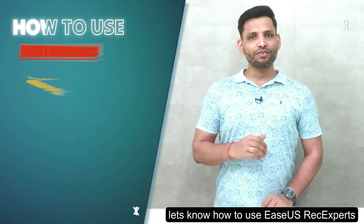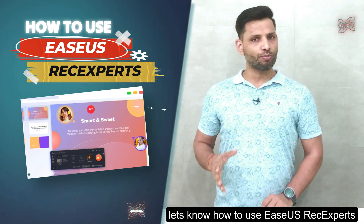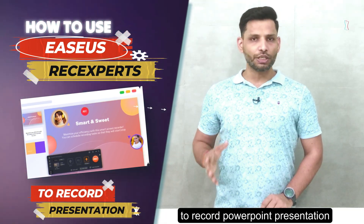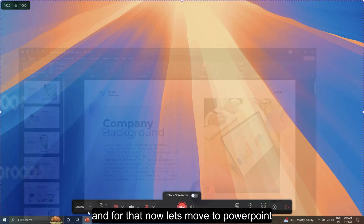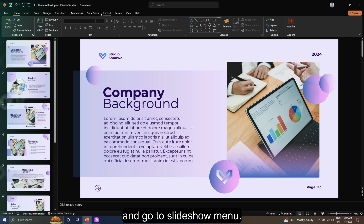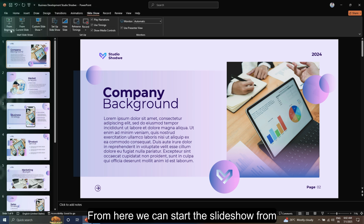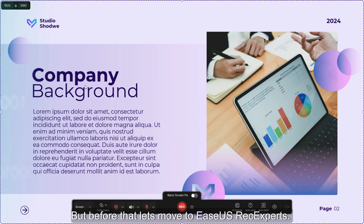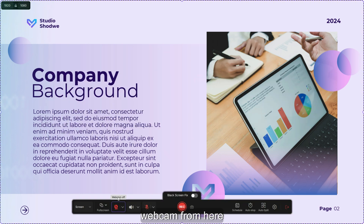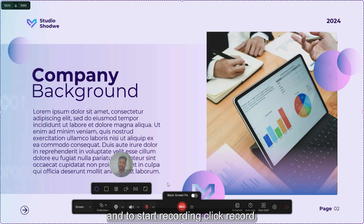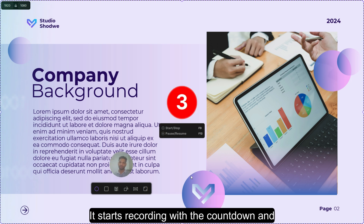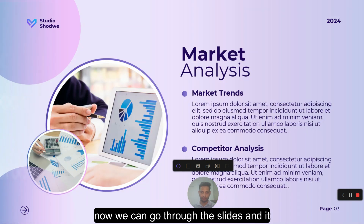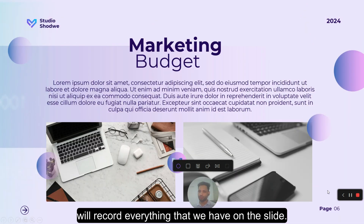Now that we have set it up, let's use EaseUS RecExperts to record a PowerPoint presentation. Move to PowerPoint and go to the slideshow menu — from here we can start the slideshow from the beginning. Before that, move back to RecExperts, enable the webcam if needed, and click record. It starts recording with a countdown, and now we can go through the slides and it will record everything on the screen.